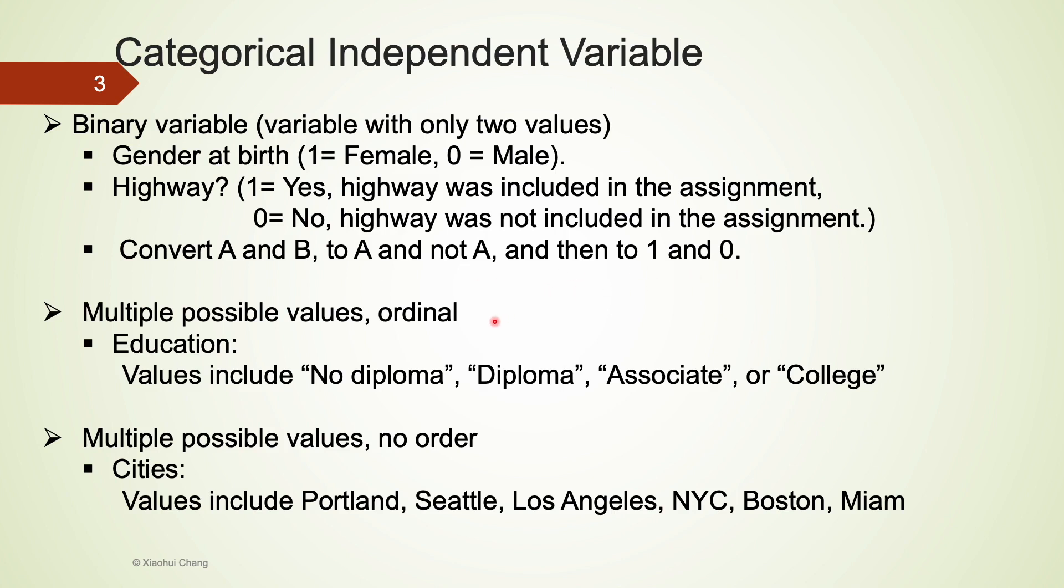For categorical variables that take more than two values, we can divide them into two groups: ordinal versus no order. For the ordinal group, one example is the subject's education level. The education level could include no diploma, diploma, associate, or college. As you can see, there is an actual order to the values.